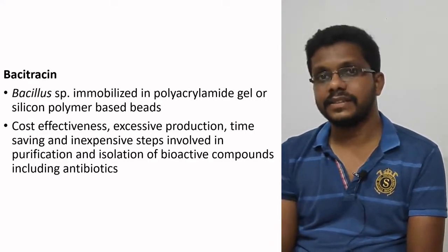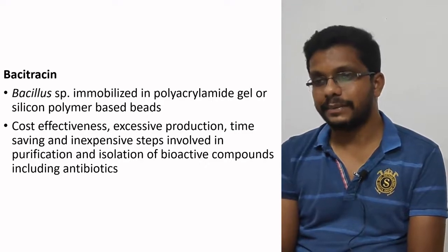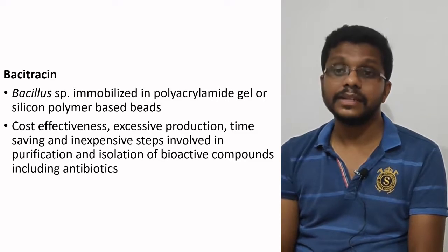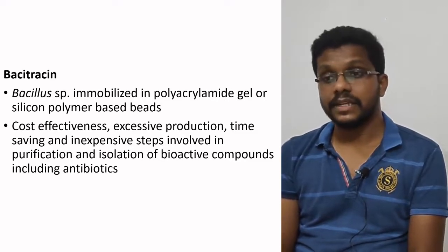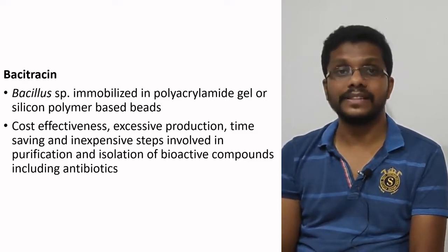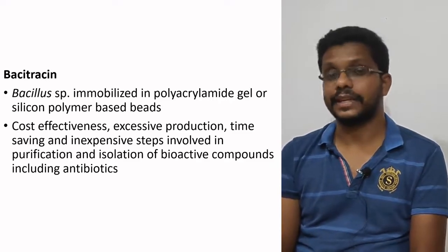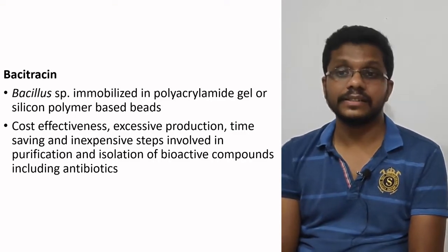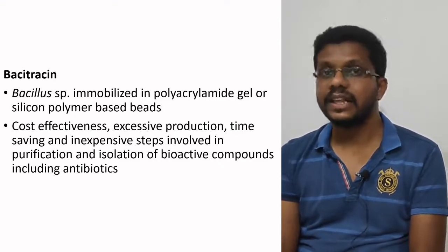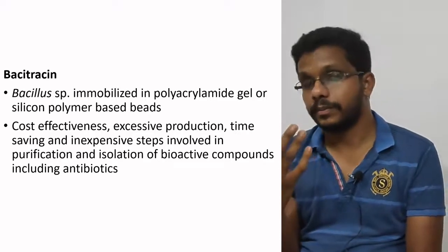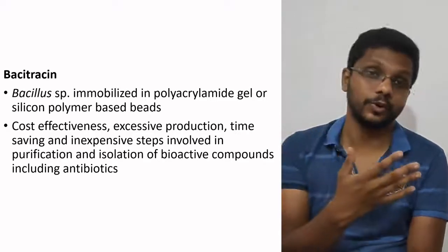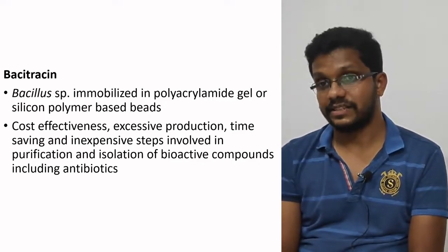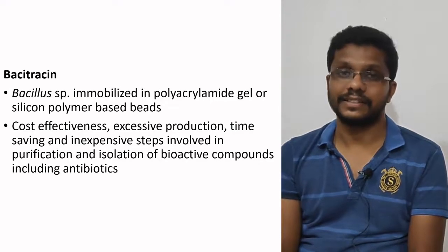Bacitracin is another antibiotic we use today — sometimes given in hospitals. It is produced by Bacillus, and bacitracin can be produced by immobilized Bacillus cells. Here we are not immobilizing the enzyme but immobilizing the whole cell. Polyacrylamide gel is used for the immobilization of the cells, which are non-growing but retain all the enzymes necessary for the production of bacitracin, which can be used over an extended period.